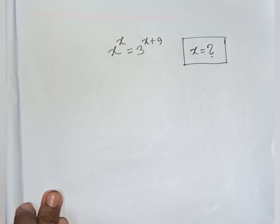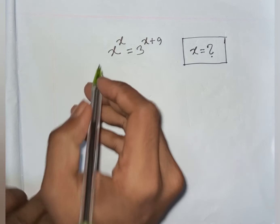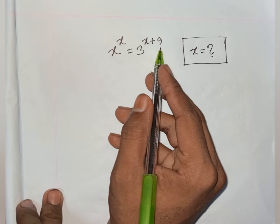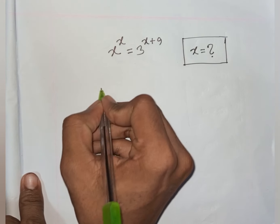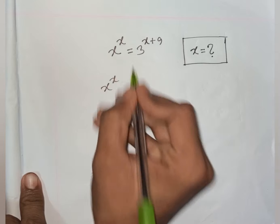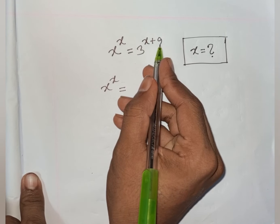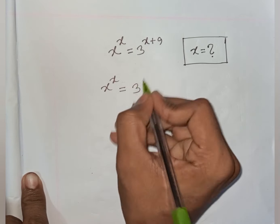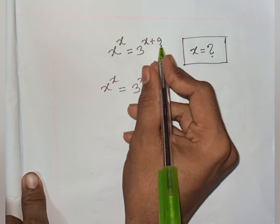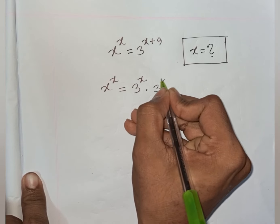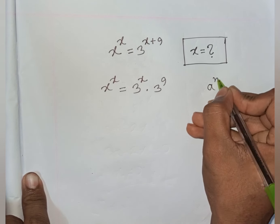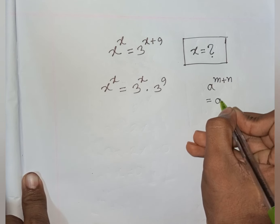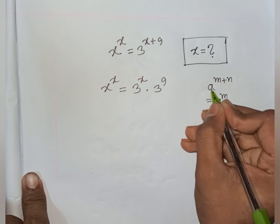Next problem: How to solve x^x = 3^(x+9). Find the value of x. We have x^x = 3^(x+9). The right side can be written as 3^x times 3^9, using the rule a^(m+n) = a^m · a^n.